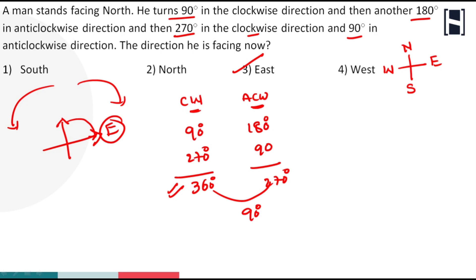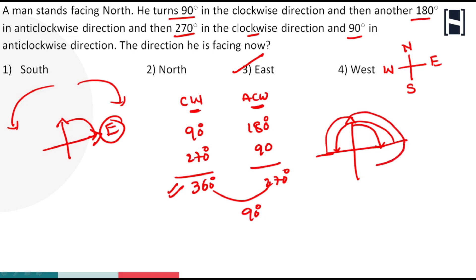For example, if you use the traditional method it takes at least two to three minutes — that's a waste of time. Look at the screen: a person facing north moves 90 degrees clockwise, then 180 degrees anti-clockwise, then 270 degrees clockwise, then 90 degrees anti-clockwise. Step by step that brings you to the east side. That is the traditional method.